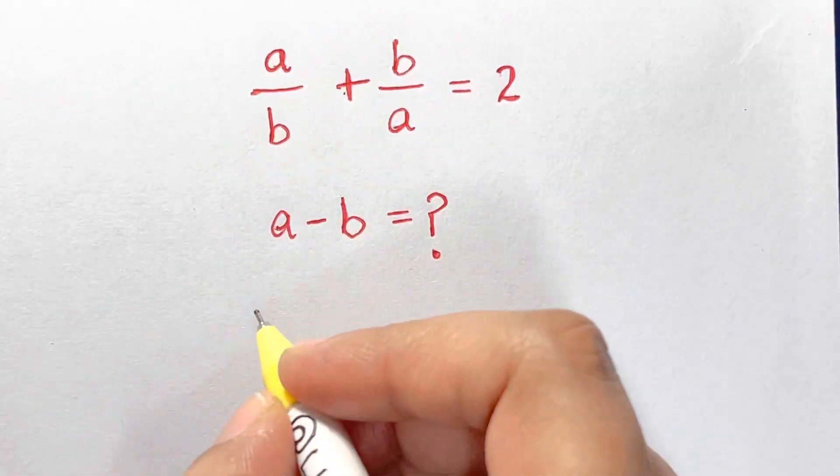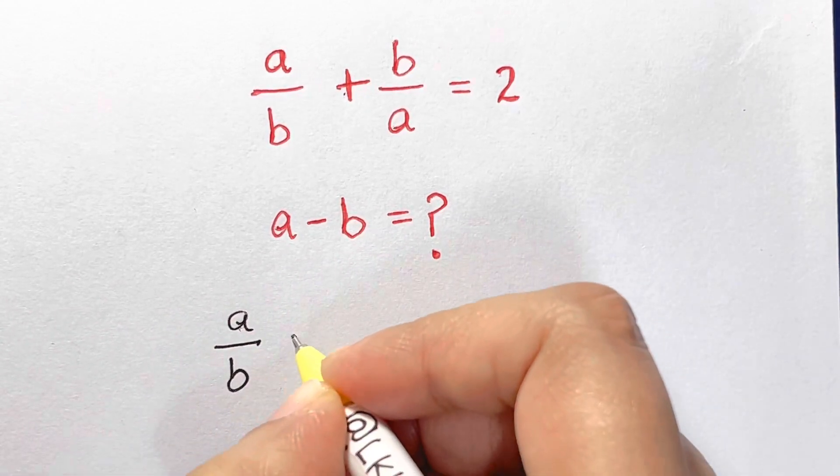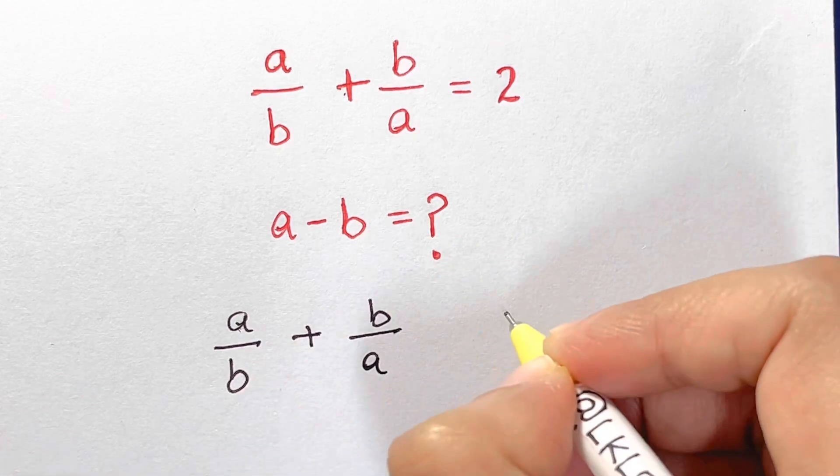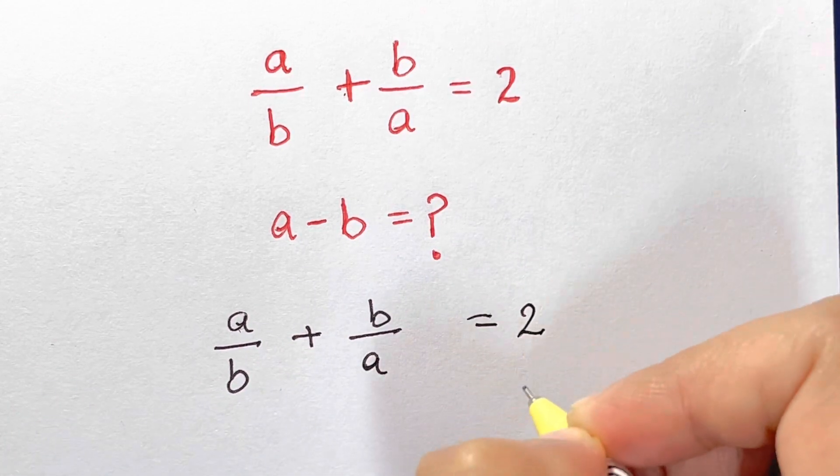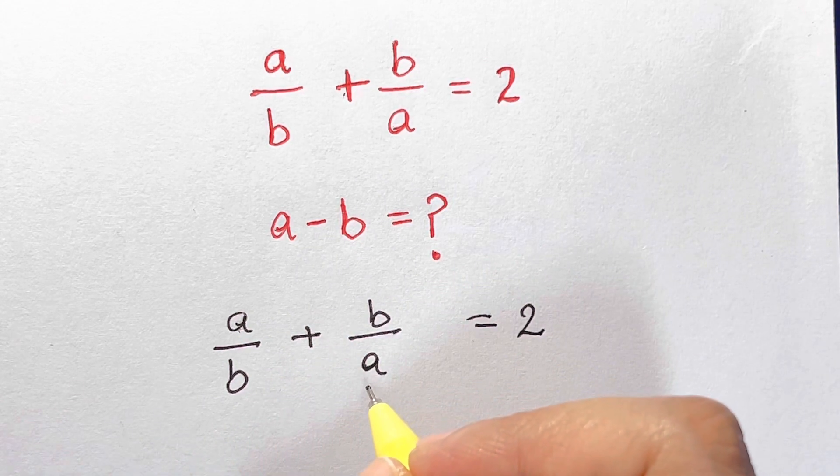First of all, let me write it down. We have a over b plus b over a which is equal to 2. So here I have the denominators a and b.